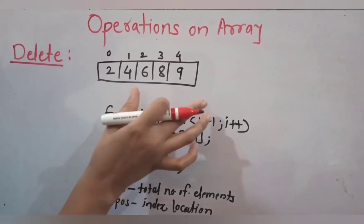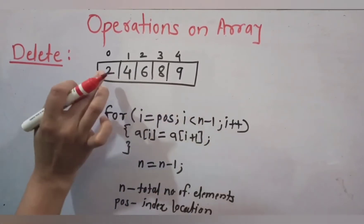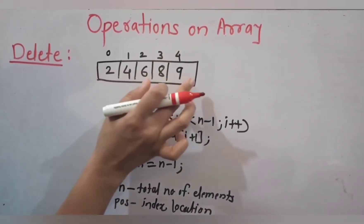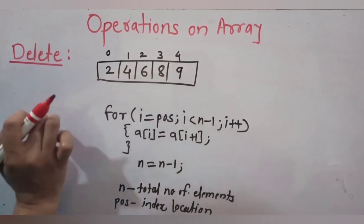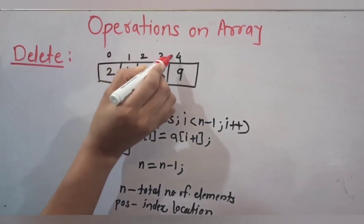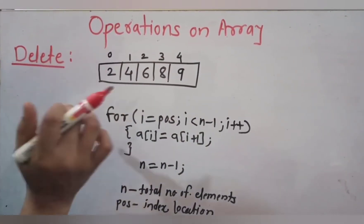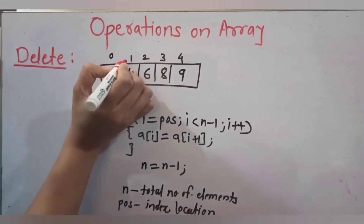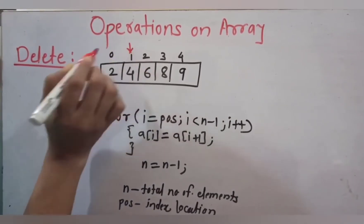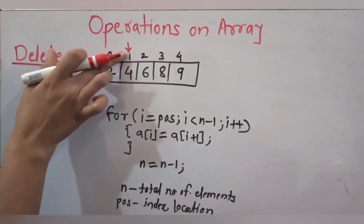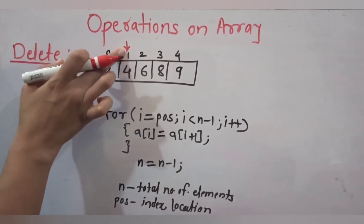Now we will take one example. Here I have taken an array containing five elements: 2, 4, 6, 8, and 9, with index locations 0, 1, 2, 3, and 4. Suppose I want to delete the element 4, which is present at the second location — that is, index position 1.